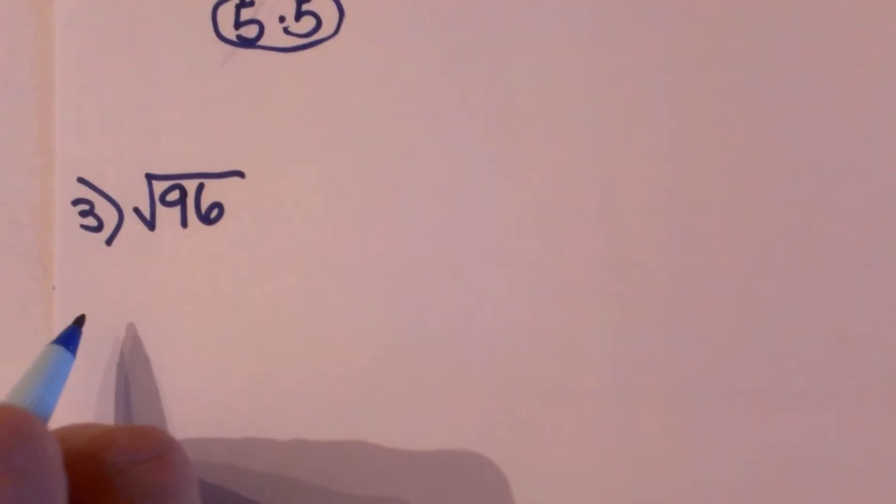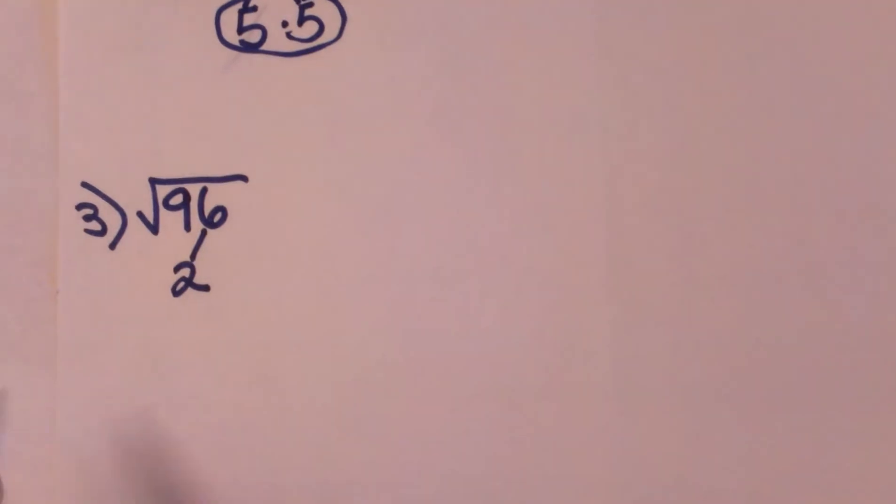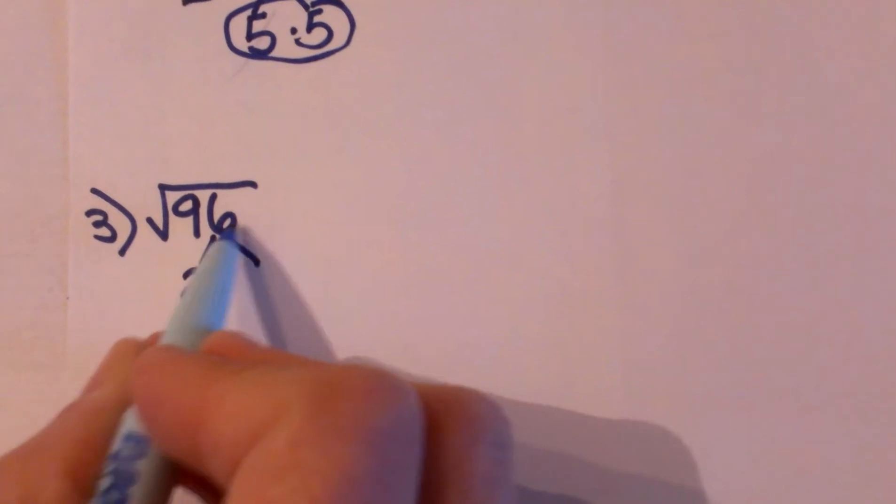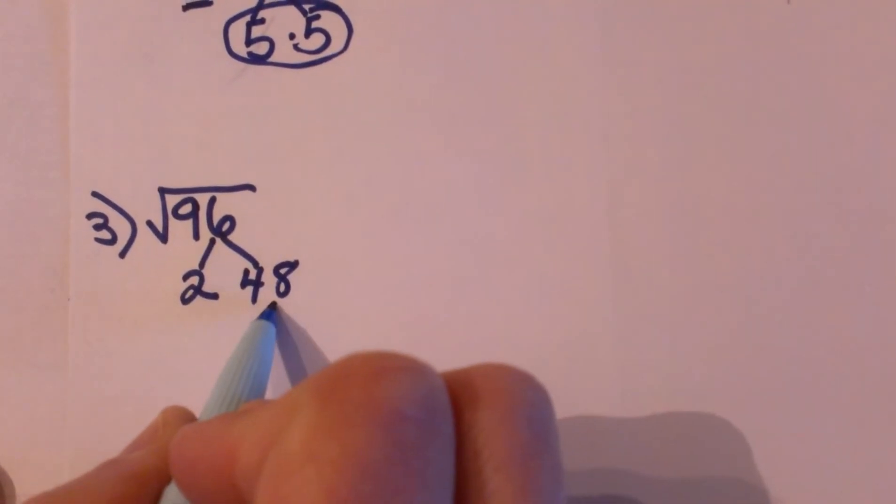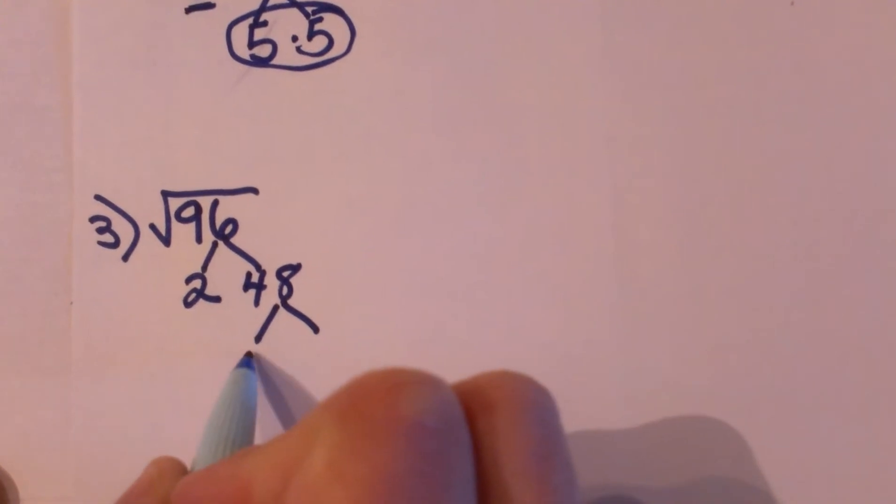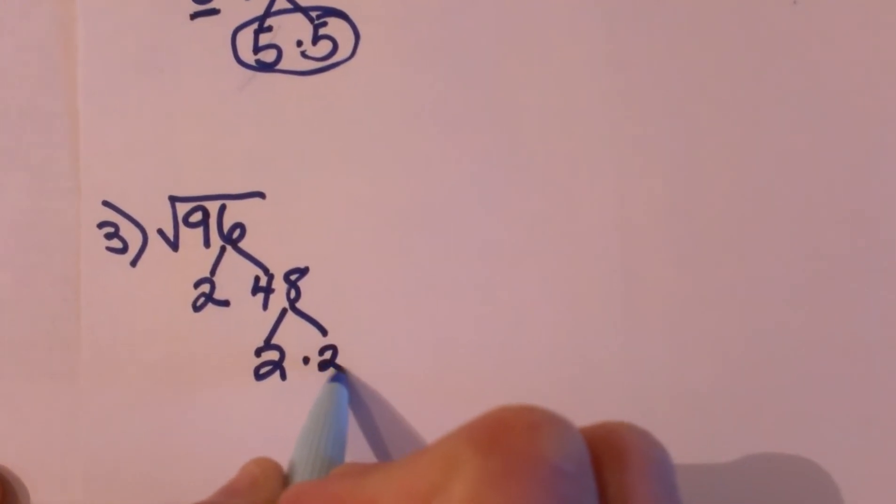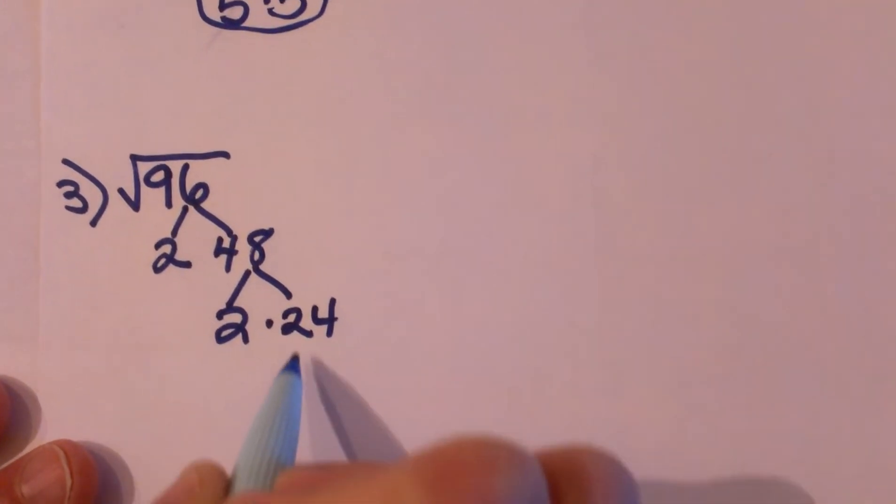The square root of 96. 96 is a fairly large number so let's just start breaking down factors. We know it is even so 2 is going to go into it. 2 times 48 is 96 and then I will break down 48 again. 2 times 24 we have an even number again.